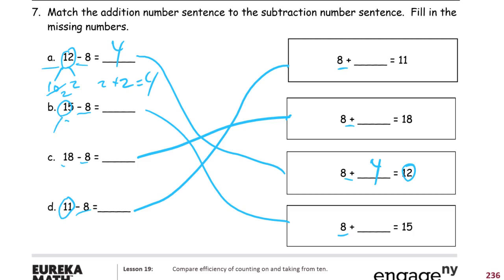15 minus 8. 15 is 10, 5. 10 minus 8 is 2. So we have 2 plus that 5. Going to have 7 left. And that means this 15, there's the related addition sentence here. So that missing part was 7. This missing part also has to be 7.